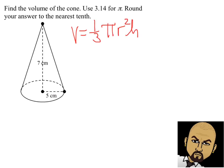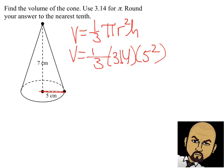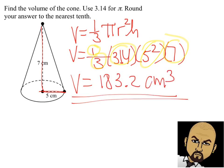Here we have a cone. The formula for the volume of a cone, if you remember, is one-third of the cylinder: one-third times pi times the radius squared times the height. We know pi is 3.14. The radius is 5, so you're going to square it, and the height is 7 centimeters. On your calculator, do 5 squared — which is 5 times 5 — multiply by 3.14, then by 7, and then divide by 3. Round to the nearest tenth, and you end up with a volume of 183.2 centimeters cubed.